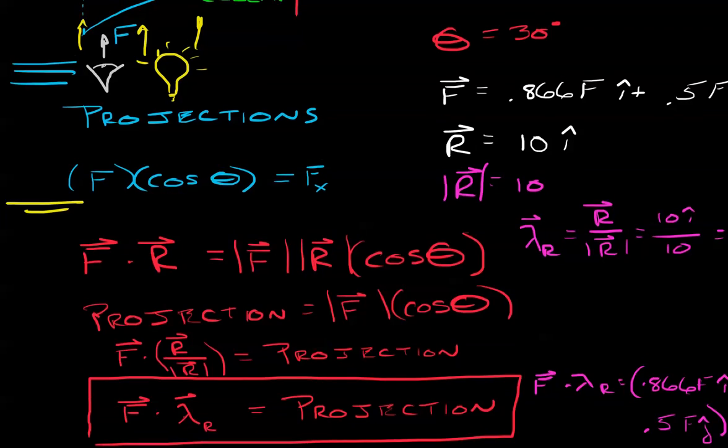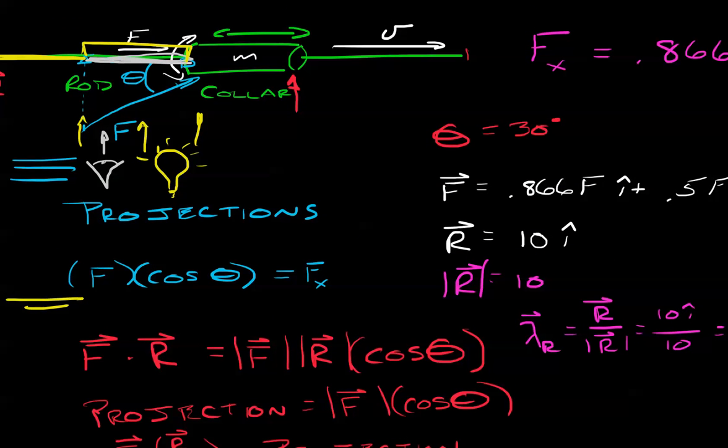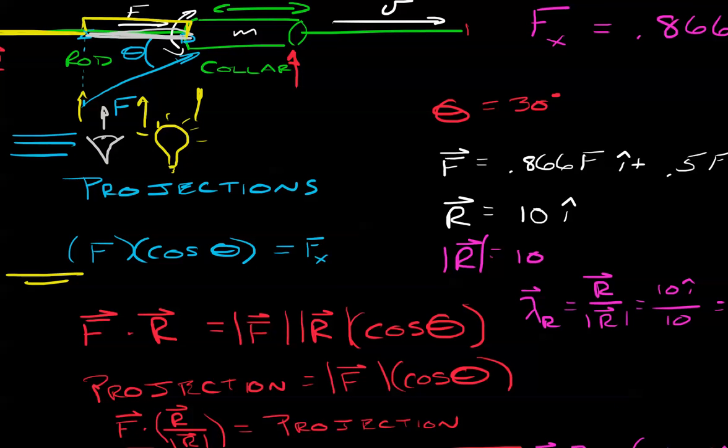In summary, the projection is found by using the dot product. A good way to visualize or to feel your way through is imagine you're a light bulb. It's turned on and we're looking for the shadow. Or, if you're looking at an object, what is its apparent width? How wide does it look to you versus how wide it actually is? This is a concept that we call a projection. We'll jump into it more on our next runaround. Thanks and I'll see you then.